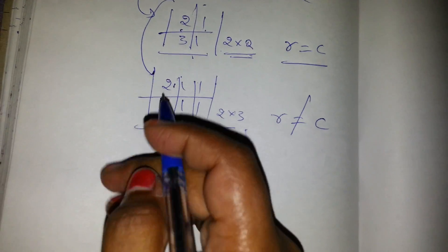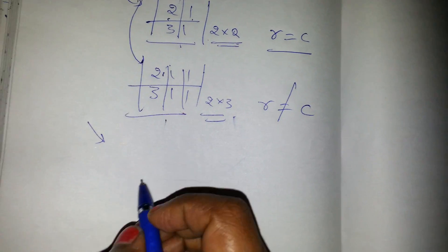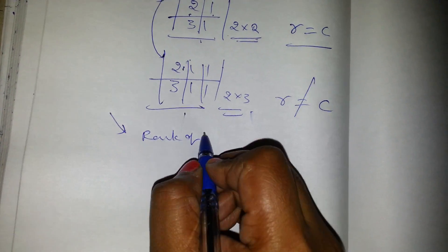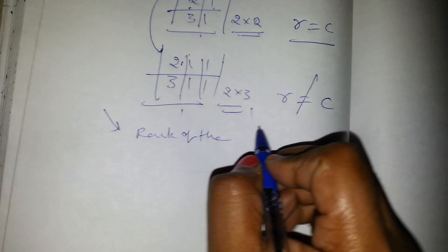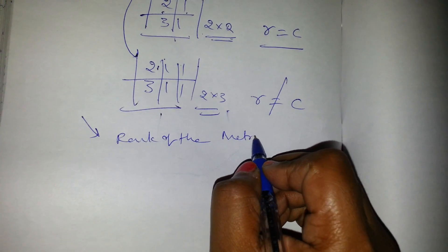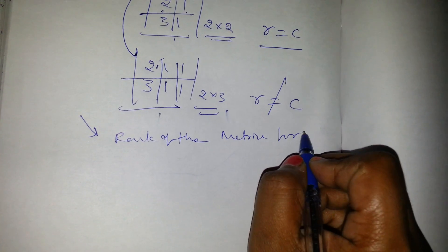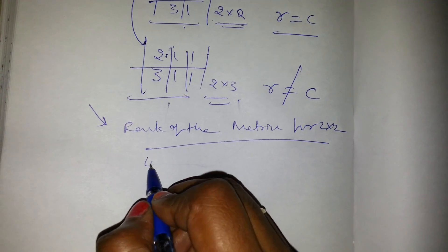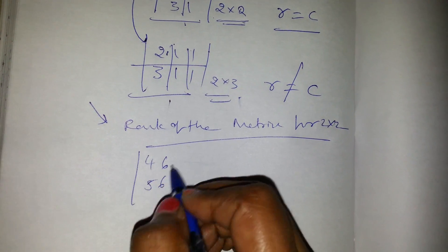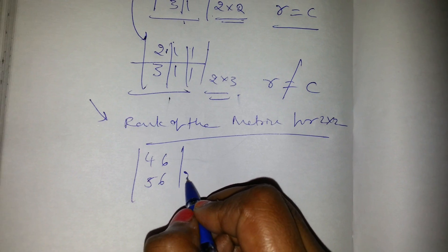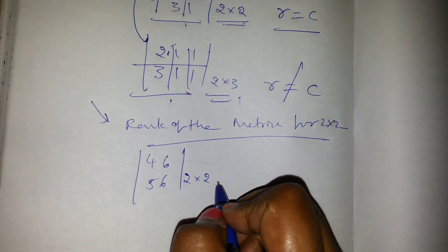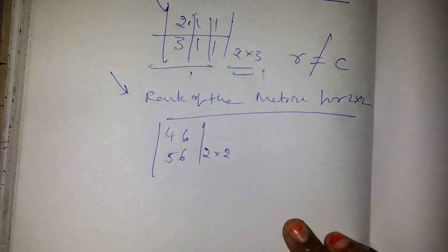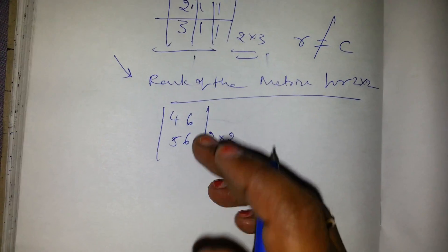Now coming to the rank of the matrix. Consider a 2 by 2 matrix: 4, 6, 5, 6. It is a square matrix and its order is 2 by 2.